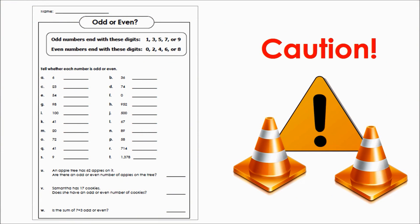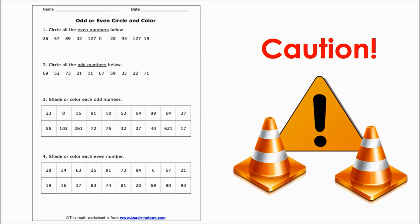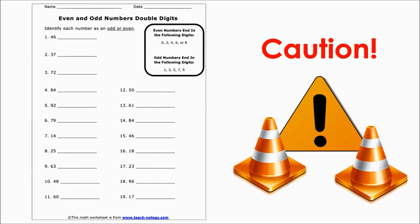Caution! Beware of activities that just have students identify odd or even numbers. These worksheets do not build understanding of what it means for a number to be odd or even. Instead, students apply a rule without any understanding over and over. Without an understanding of why numbers are odd or even, students may actually practice the rule incorrectly many times before it is detected, building a misunderstanding that is difficult to correct.